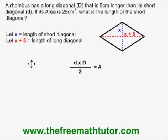Let's fill in this formula with our variables as defined. We get x times x plus five over two equals twenty-five.